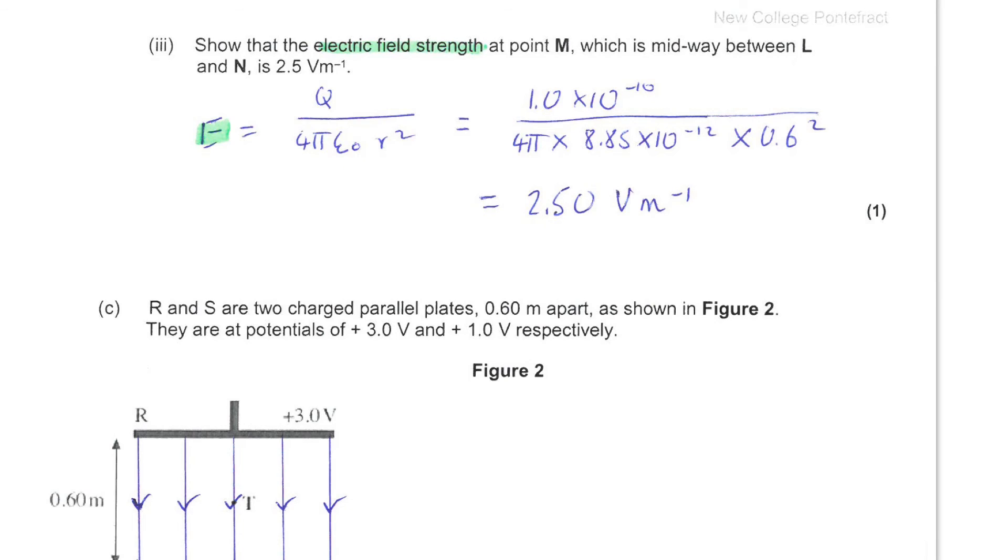So then using the equation for electric field strength in a radial field, we can substitute in the value for Q that we previously calculated, the 4π epsilon_0, and that distance that I have just shown you in the diagram. And this leads us to the correct answer.